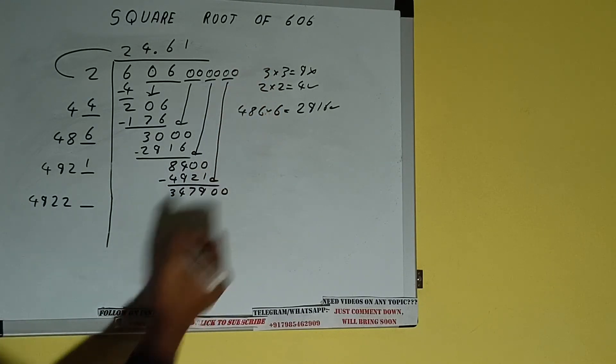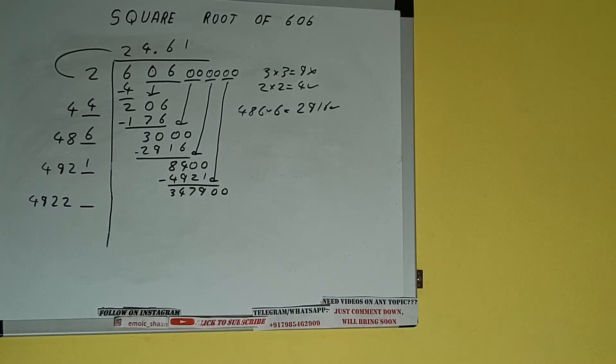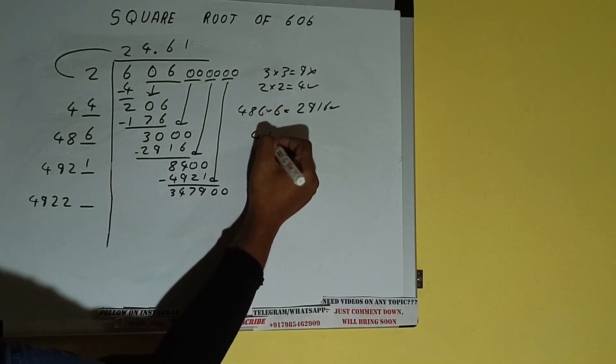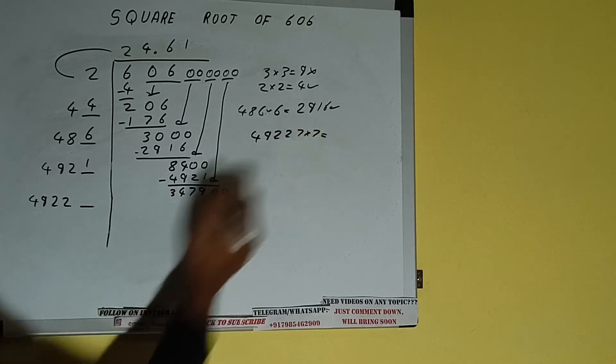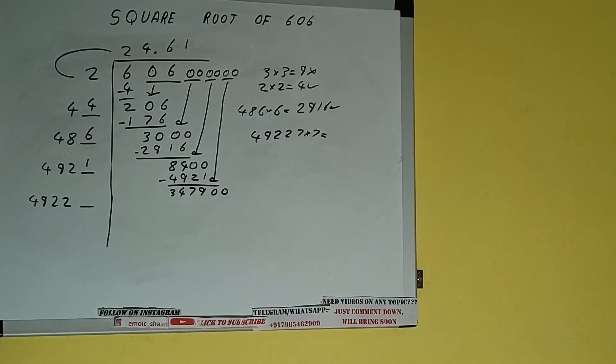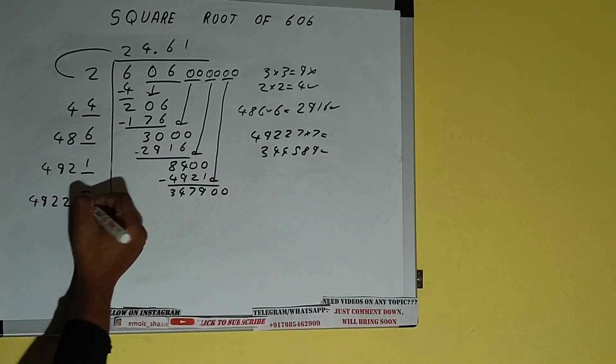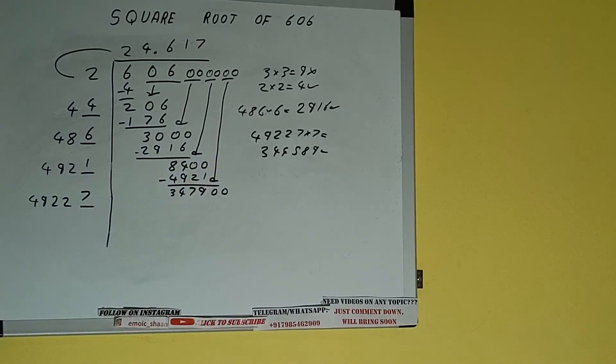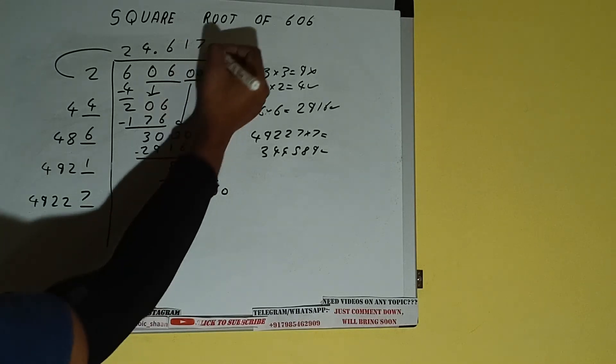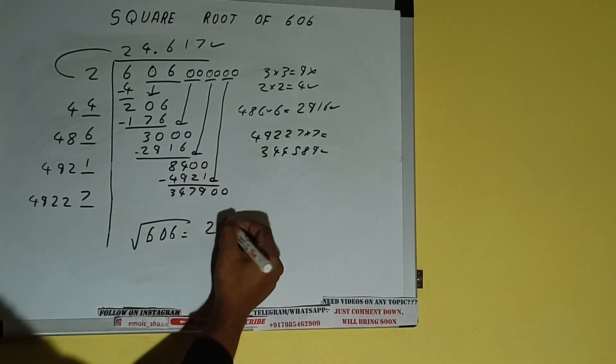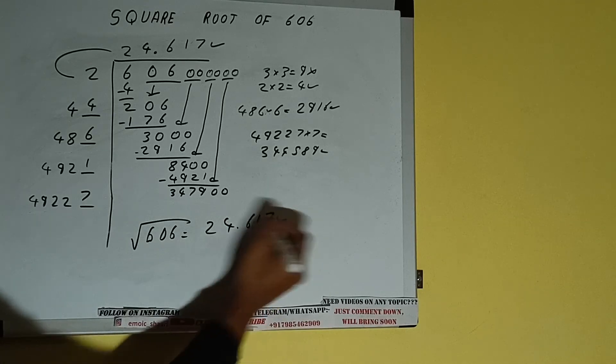It will be 347,900. Compare this 49 and 347. So 49 seven times is 343, so we can try seven times. 49227 into seven we can try, and we'll be having 344,589, which is good to take. So seven here and seven here, but we don't need to calculate because we got the answer correct up to three decimal places. So square root of 606 will be 24.617. That will be the answer.